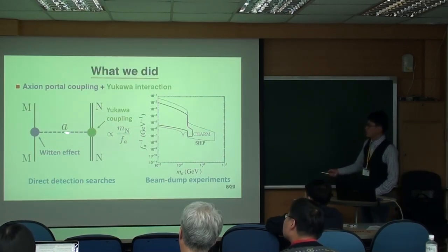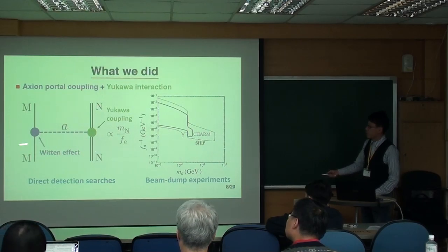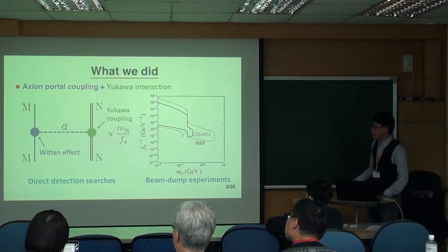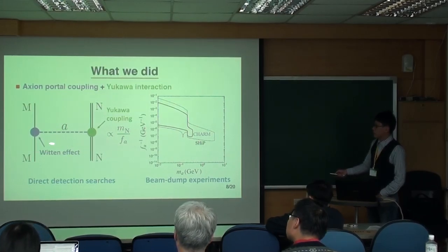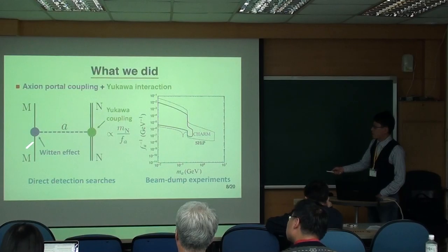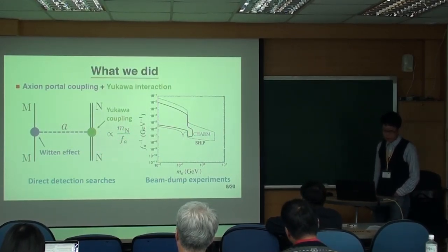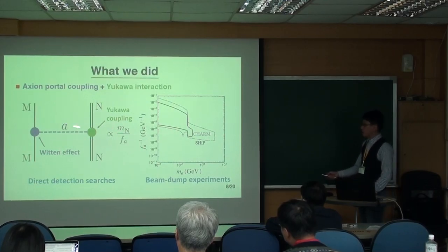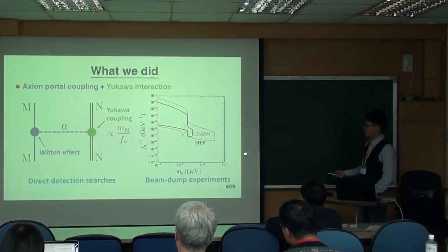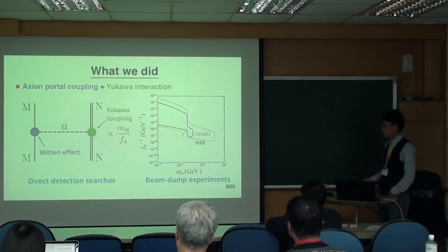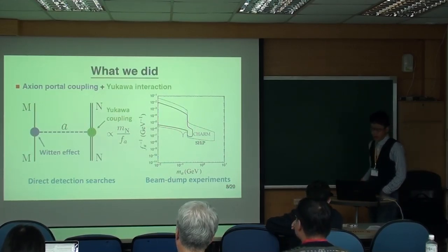So in order to calculate this interaction, we have to use the Witten effect which I introduced in previous slides. And so after we calculate this coupling by the Witten effect, we can obtain the scattering cross section and compare it to some direct search experiments. And because we introduce axions, we also consider some constraints from beam-dump experiments because this experiment is looking for light particles.